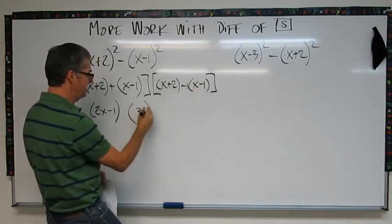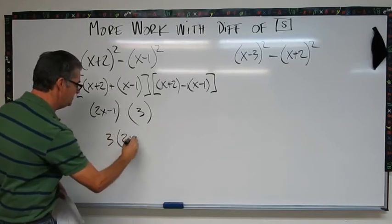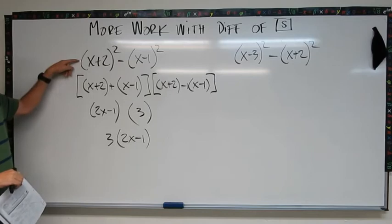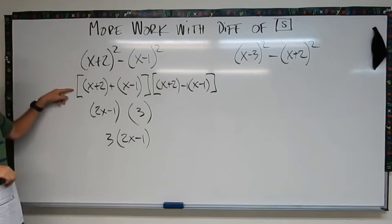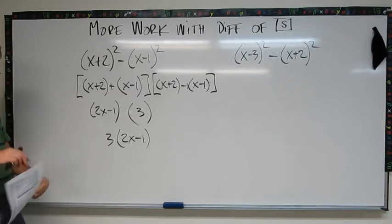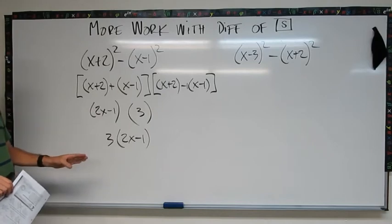So I can write this a little bit better. This is going to be 3 times 2x minus 1. Now that's pretty cool. This was really complicated, it got even more complicated here, but guess what? We worked it down and we got a relatively simple answer.